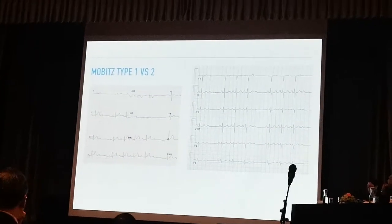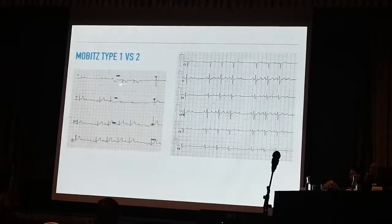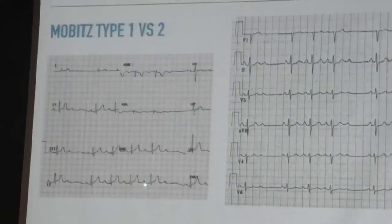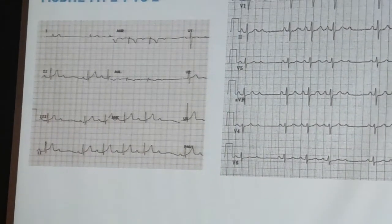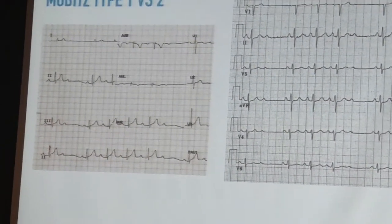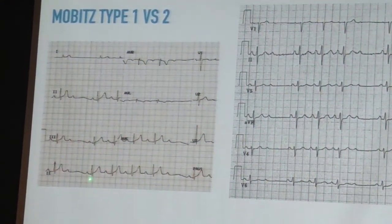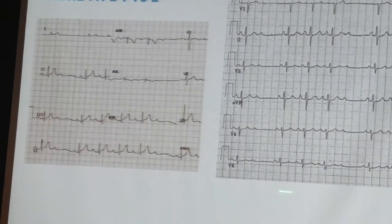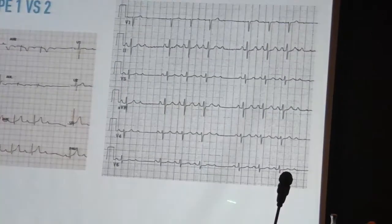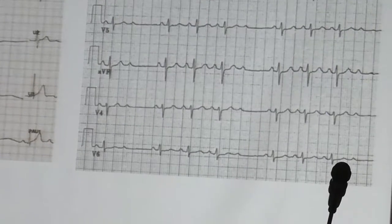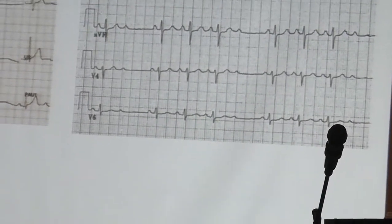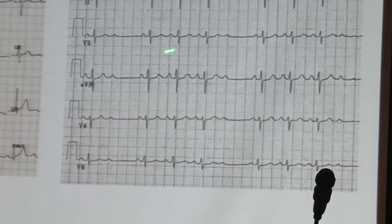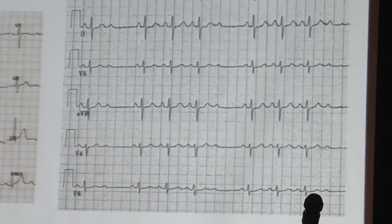These are two ECGs I found online. Over here you can see very clearly there are P-waves: 1, 2, 3, 4, 5 — the fifth P-wave got non-conducted. When you look at the PR interval, it gets longer and longer and then there's a dropped beat. So this is the classic Mobitz Type 1. Whereas the ECG on your right looks almost similar — you have P-wave, P-wave, P-wave, and then there's a dropped beat — but when you look at it, the PR interval seems to be consistently similar. There's no prolongation of the PR. Therefore we call this Mobitz Type 2. But the question is why are we so worried about Mobitz Type 1 or Mobitz Type 2?